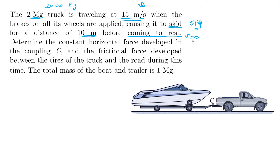Determine the constant horizontal force developed in the coupling C — this is the coupling C, so we need the reaction — and the frictional force developed between the tires of the truck and the road during this time. Since this is just a particle, we treat it as one friction force.